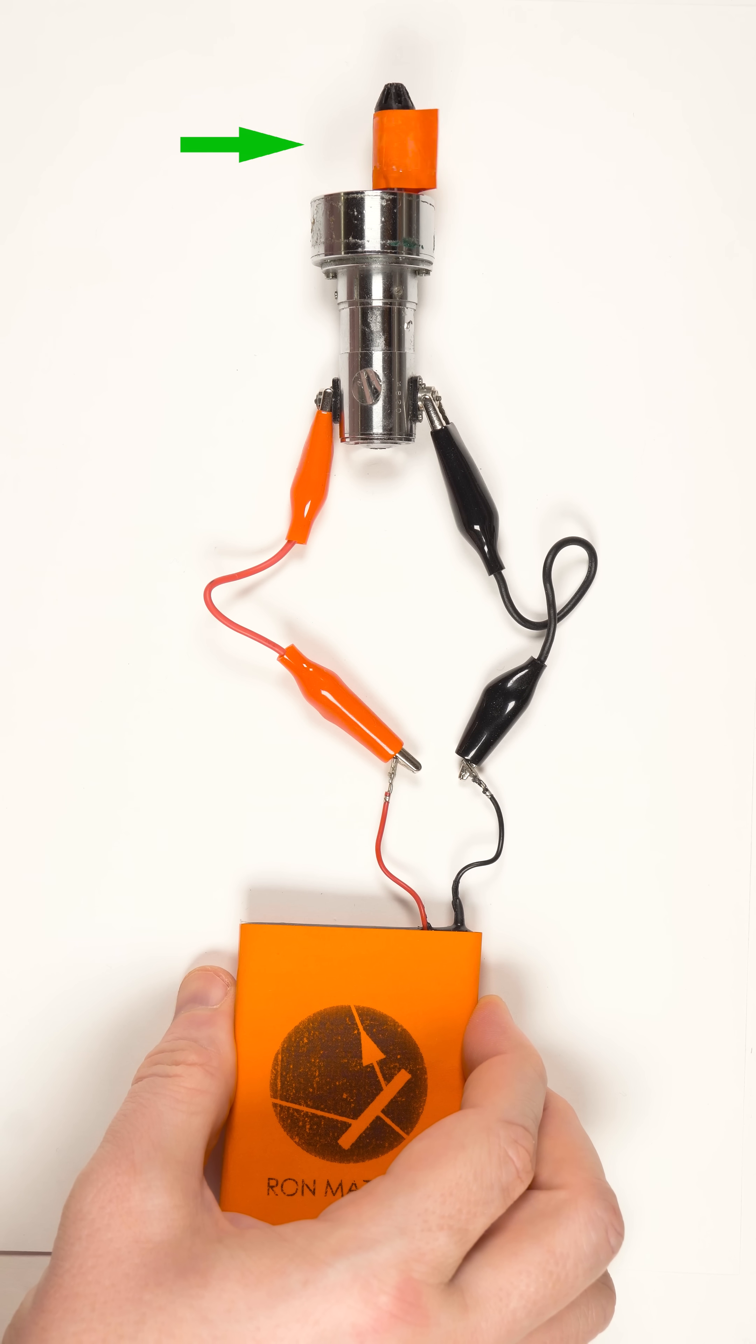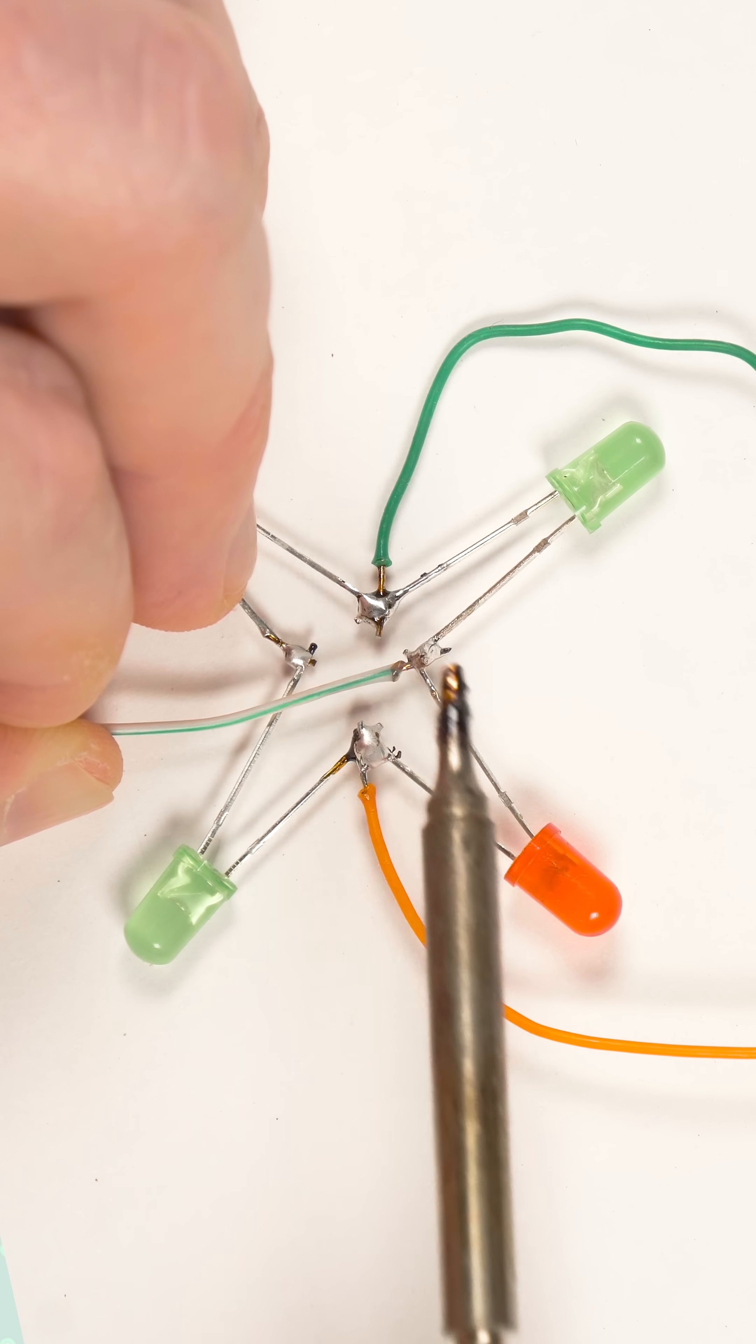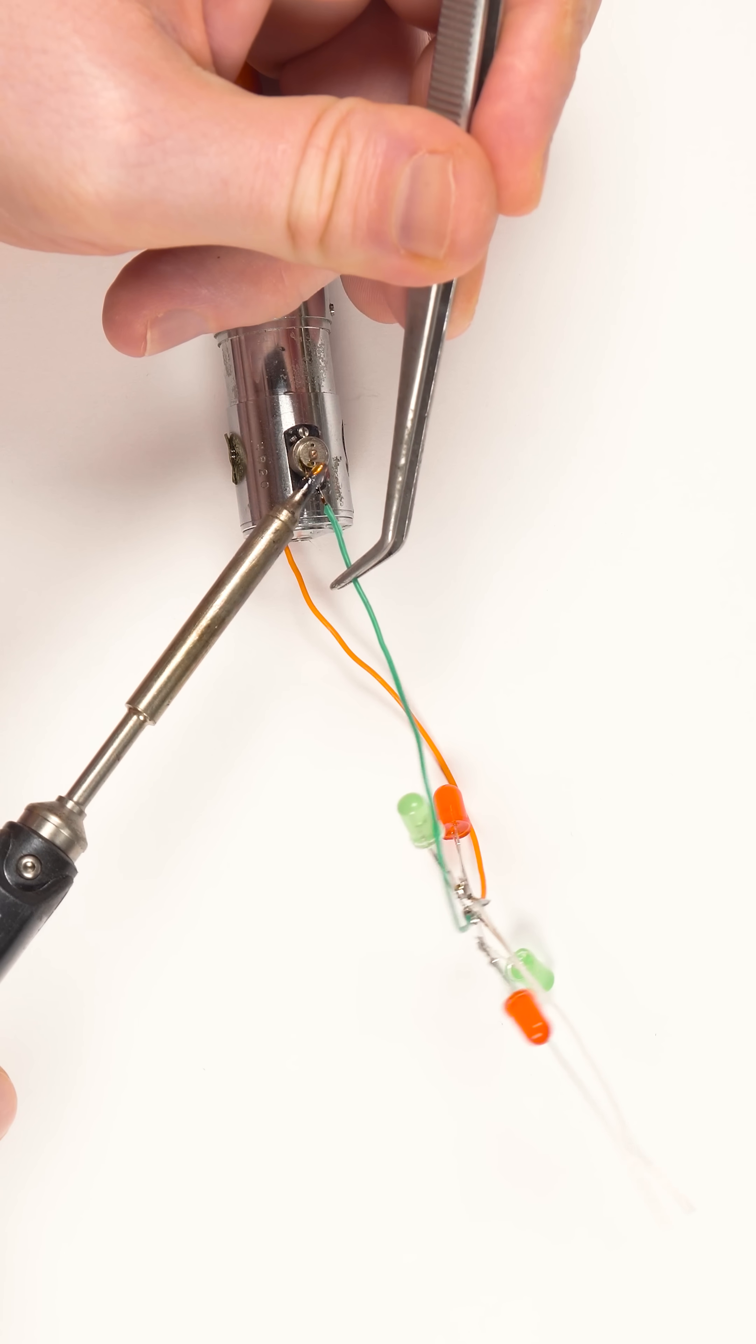Now let us add a bridge rectifier to our circuit. We will build it from LEDs. An LED is just a type of diode, so it can act as a diode.